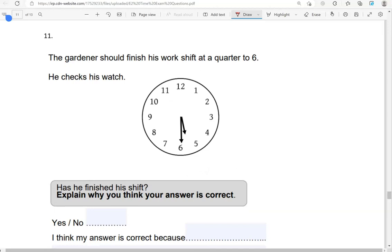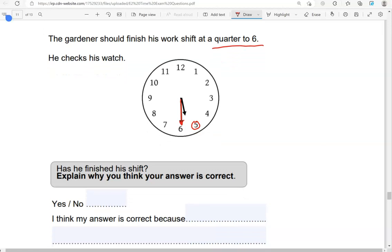The gardener should finish his work shift at quarter to six. He checks his watch. Has he finished his shift? Explain why you think your answer is correct. The clock shows half past five. So, that is 15 minutes before quarter to six. So, has he finished his shift? We're going to say no. I think my answer is correct because he needs to work for another 15 minutes.